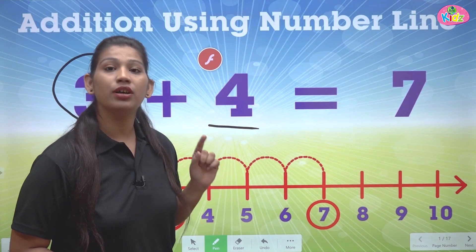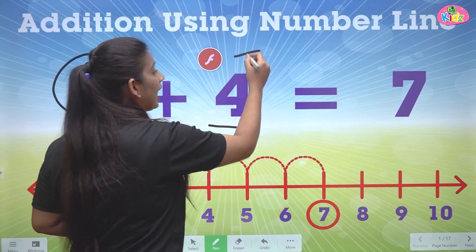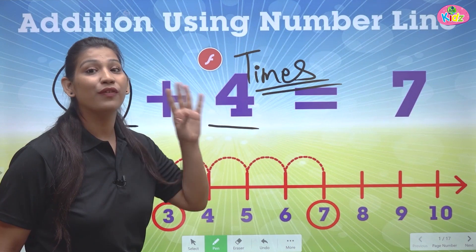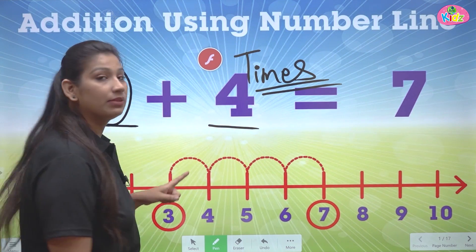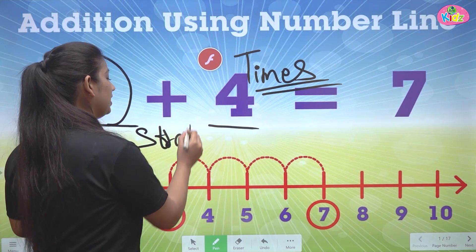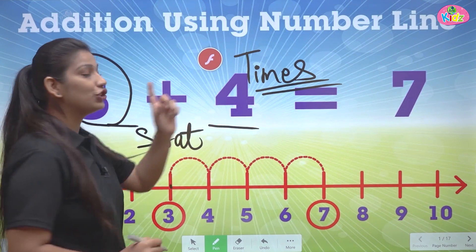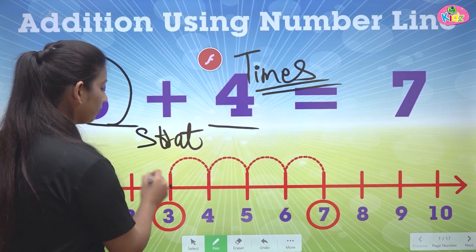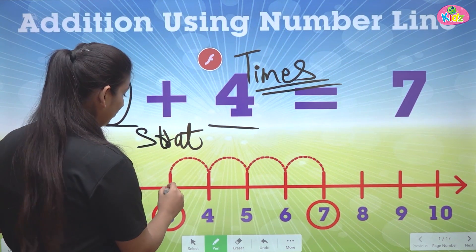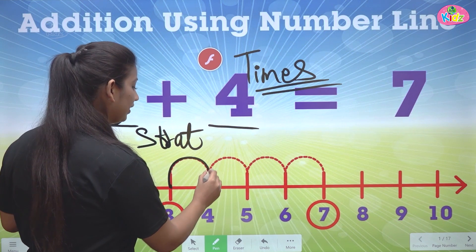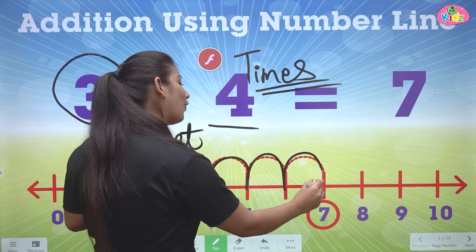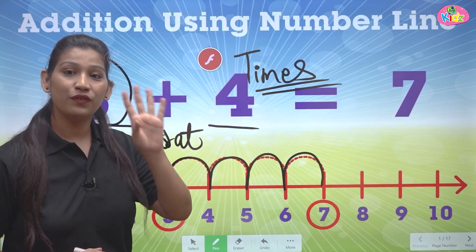And we have the next number four — this means the number of times to jump. So we will jump four times from number three. We start from three and we jump four times. One jump, two jump, three jump, four jump. We jumped four times.